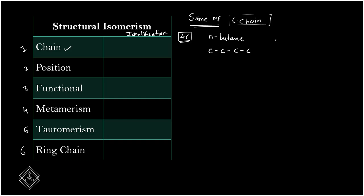The second structure has 3 carbons in series with 1 carbon branching off. If we compare their molecular formulas, they are the same, but their structures differ with respect to the carbon chain arrangement. This variation in the chain is what makes it chain isomerism.